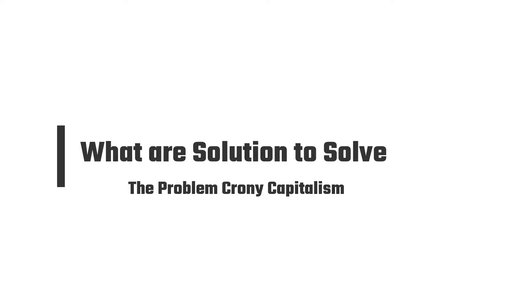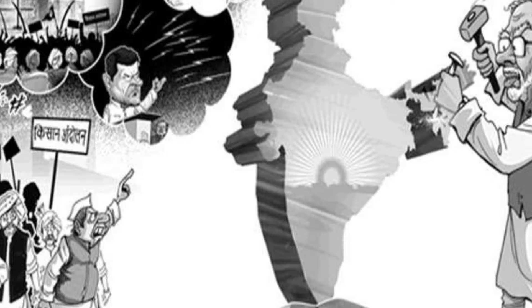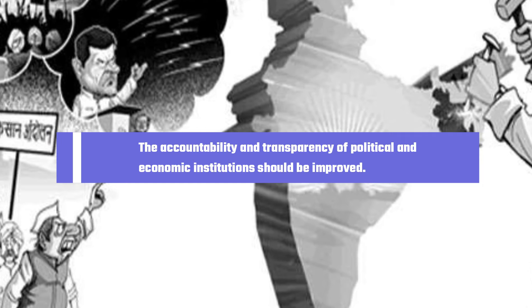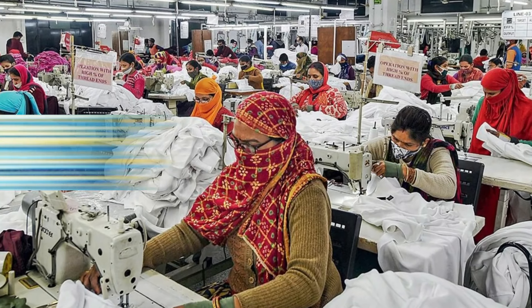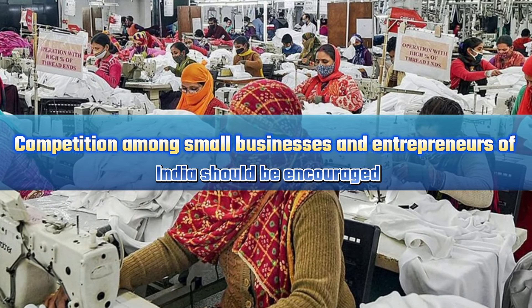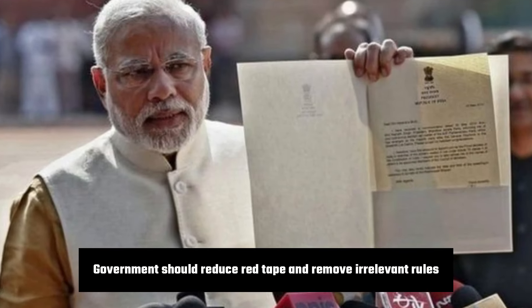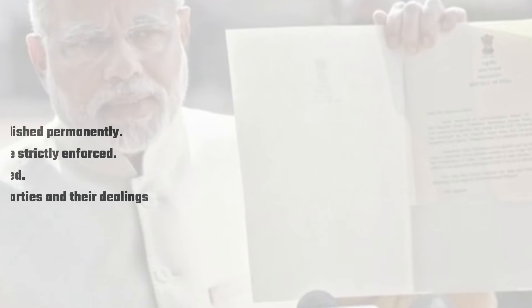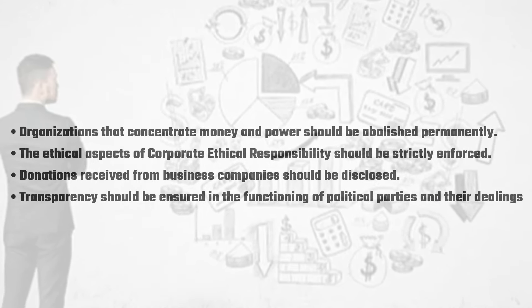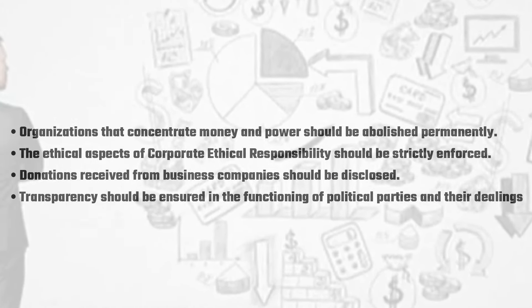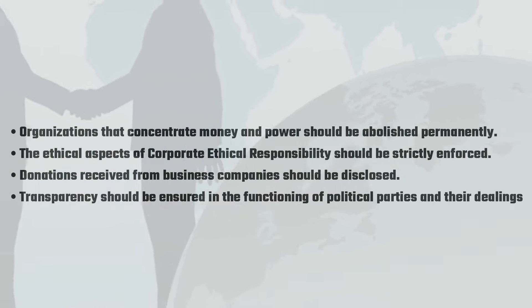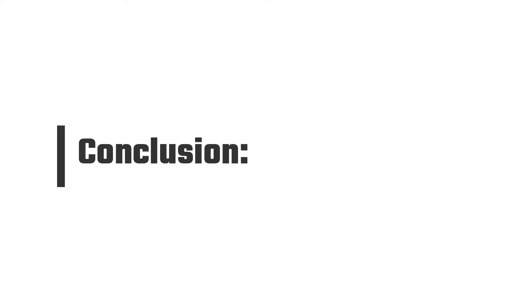So what are the solutions to the problem of crony capitalism? The accountability and transparency of political and economic institutions should be improved. Competition among small businesses and entrepreneurs should be encouraged. The government should reduce red tape and remove irrelevant rules. Organizations that concentrate money and power should be abolished permanently. The ethical aspects of corporate social responsibility should be strictly enforced, and donations received from business companies should be disclosed. Transparency should be ensured in the functioning of political parties and their dealings.